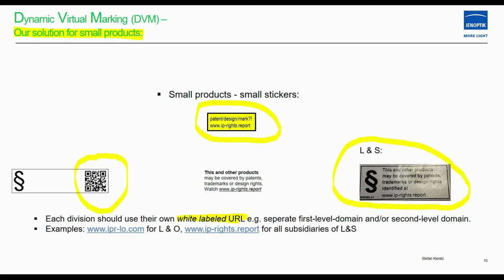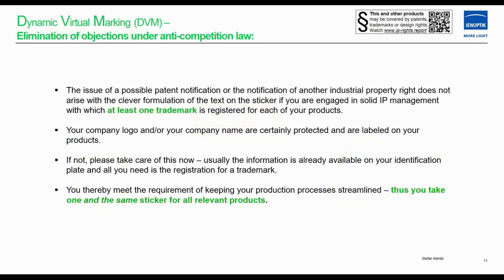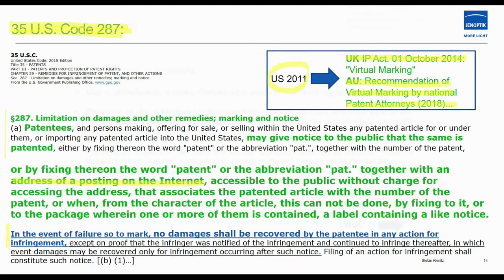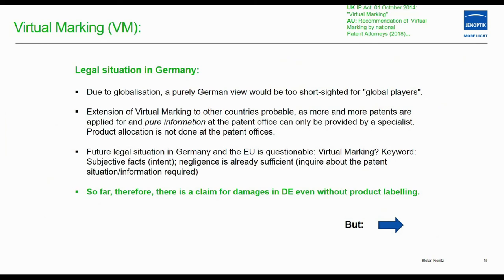We also spoke about the basics of virtual marking. The legal basis is US Code 35 USC 287, enacted in the US from 2011, and in the UK from 1st October 2014. In Australia there are also recommendations for virtual marking by national patent attorneys. The code states that in the event of failure to mark, no damages shall be covered by patentees in any action for infringement — so you have to mark.